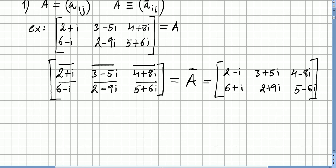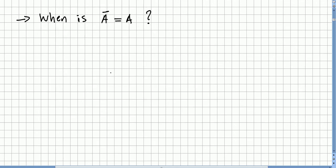So I think this is pretty obvious, right. So 2 plus i will be 2 minus i, 3 minus 5i the conjugate will be 3 plus 5i, 4 minus 8i, 6 plus i, 2 plus 9i, and 5 minus 6i. I hope I did not make any mistake here.